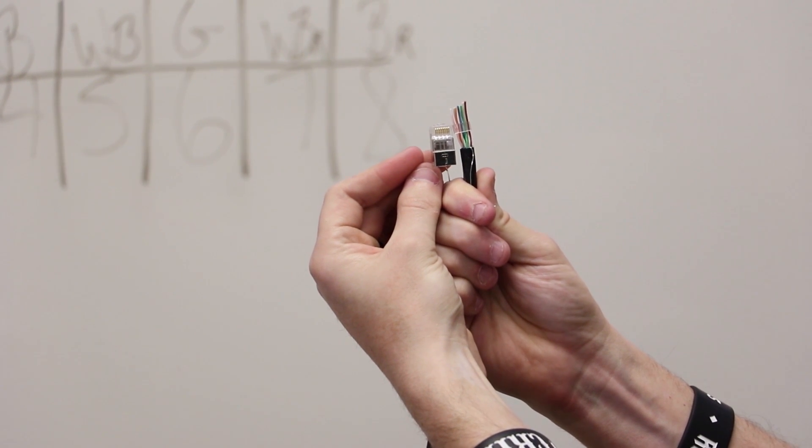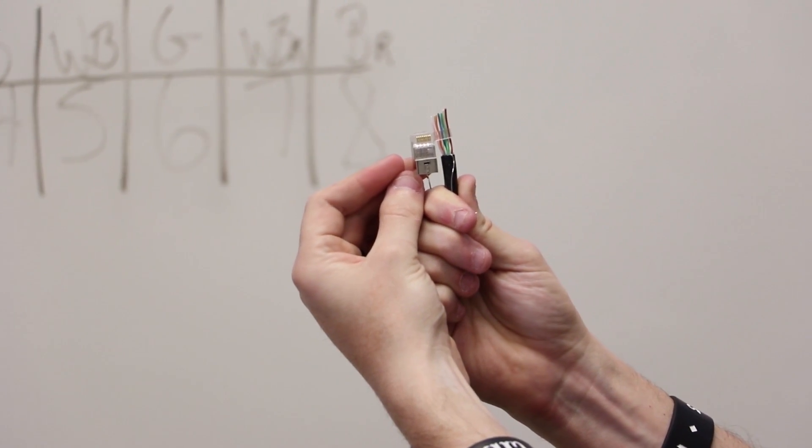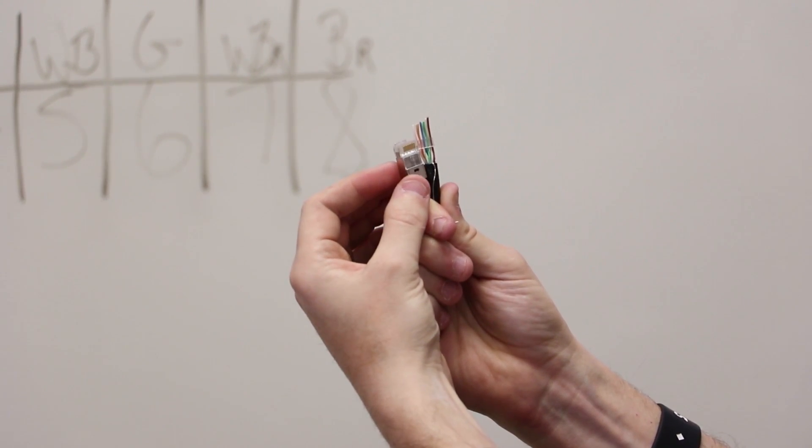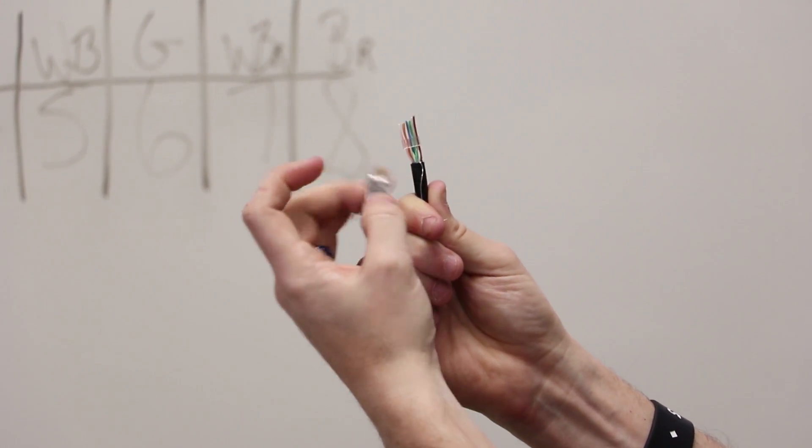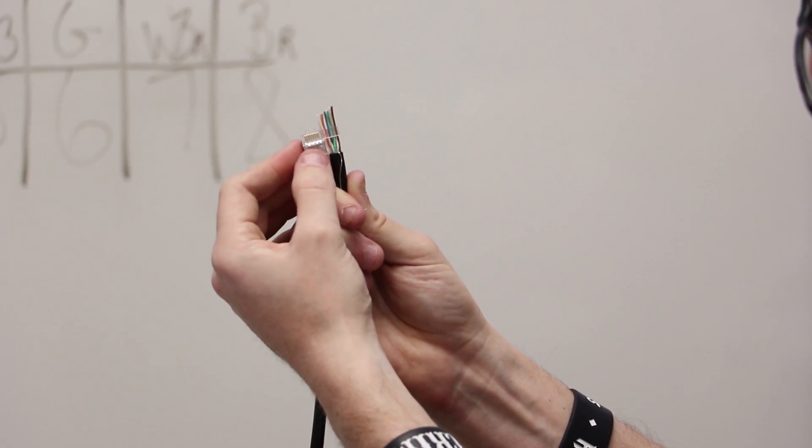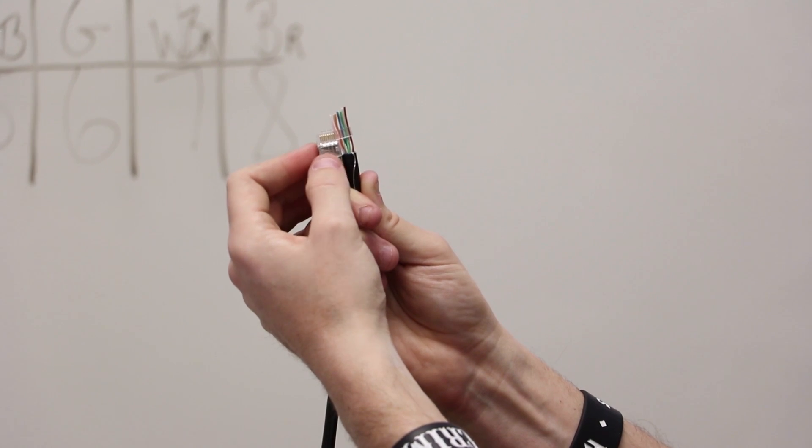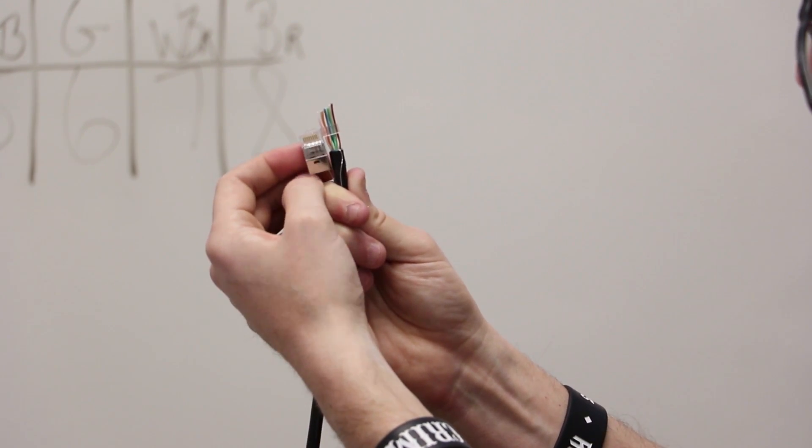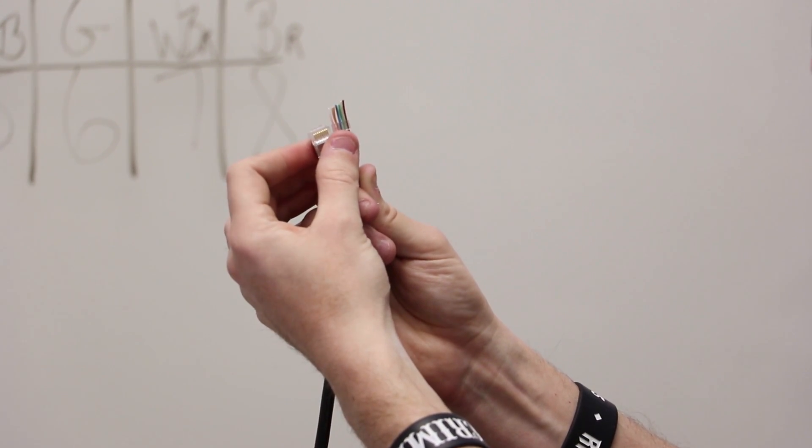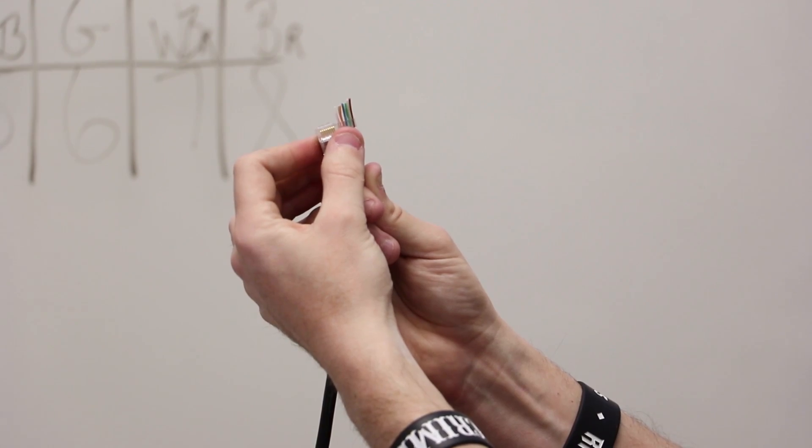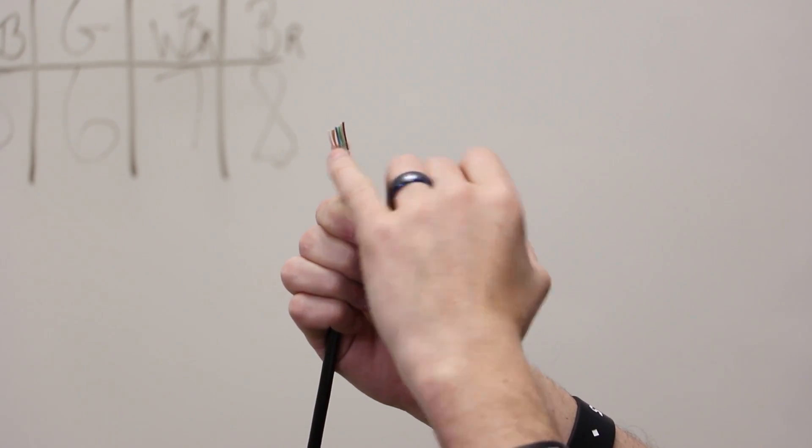You want to take your end and be flush with the sheathing and the inside of the end here where you've got enough sheathing inside the end to crimp down on. And then you want to take your insert to line up with the top of your end and cut flush to that.